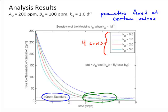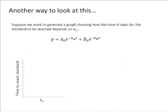Maybe I would like to generate a graph showing how the time it takes for the standard to be reached depends on kᵦ. I'm thinking about something like this, right, where I know the standard, call it Pₛ for the standard. That's equal to A₀e^(-kₐt) + B₀e^(-kᵦt).